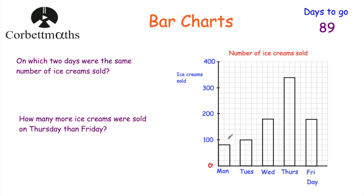Looking at each of the bars — for Monday, we've got five little boxes to get to 100, so 100 divided by 5 is 20, meaning the scale goes up in 20s: 20, 40, 60, 80. So 80 ice creams were sold on Monday, 100 on Tuesday, and so on.